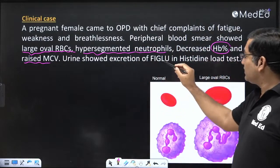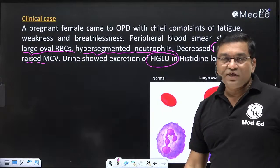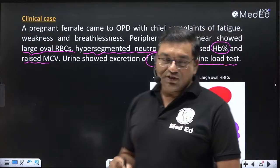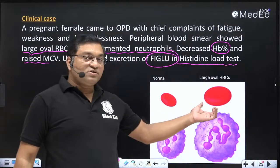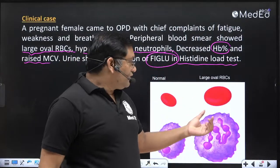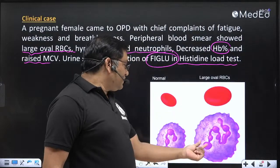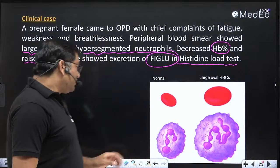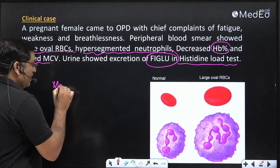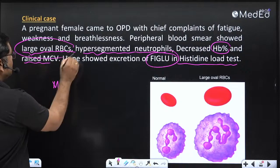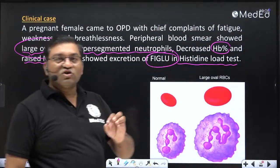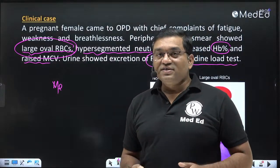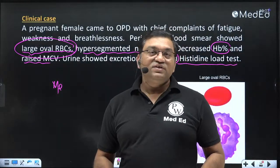Urine showed excretion of FIGLU — formiminoglutamic acid — on the histidine load test. In the peripheral smear picture, you can see large oval macrocytes and hypersegmented neutrophils, which is a classical finding in megaloblastic anemia. The diagnosis is megaloblastic anemia as indicated by large oval macrocytes and raised MCV, but the question remains whether it is due to B12 deficiency or folate deficiency.